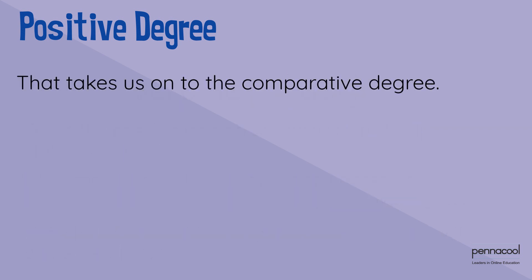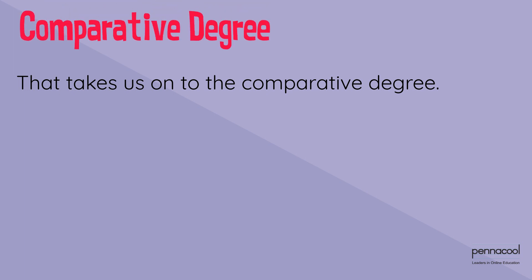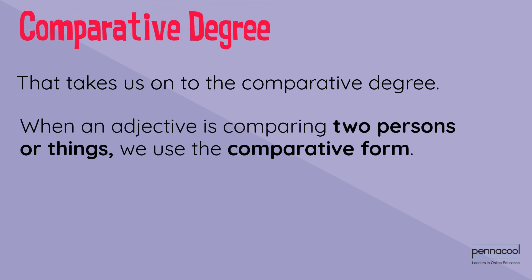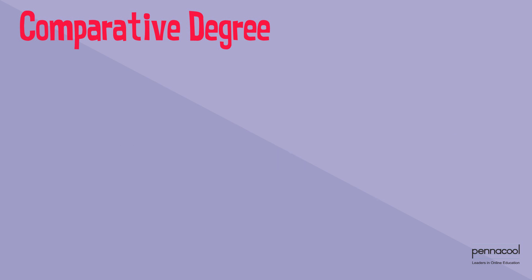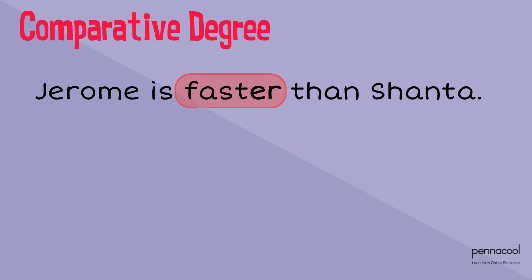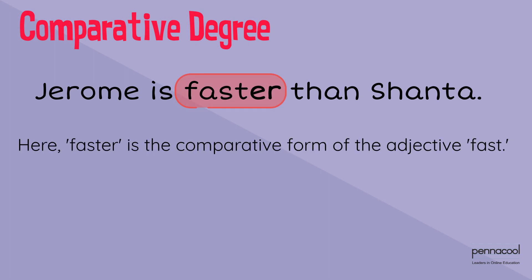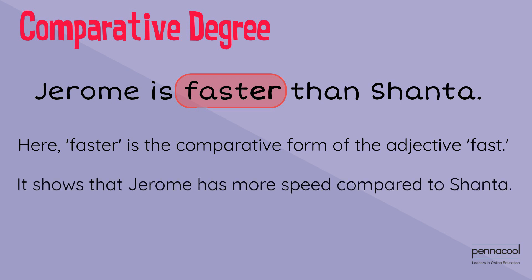That takes us on to the comparative degree. When an adjective is comparing two persons or things, we use the comparative form. The comparative is formed by adding -er to the adjective. For example: Jerome is faster than Shanta. Here, 'faster' is the comparative form of the adjective 'fast'. It shows that Jerome has more speed compared to Shanta.